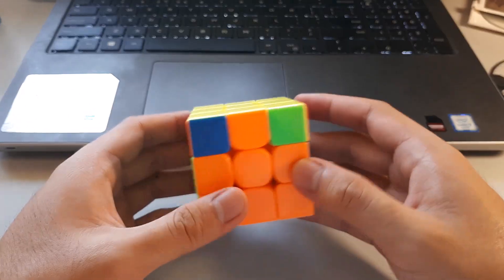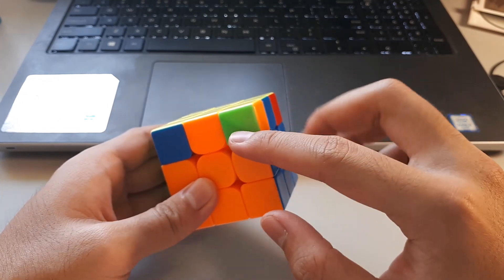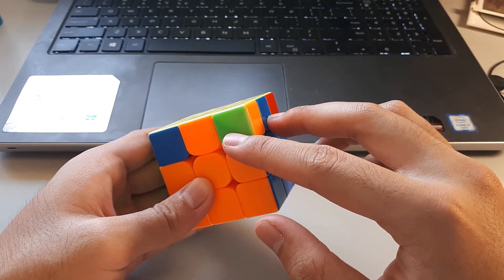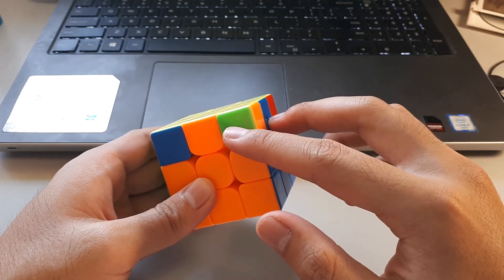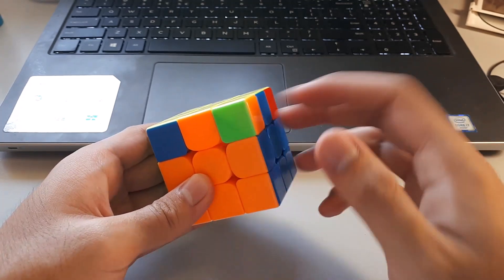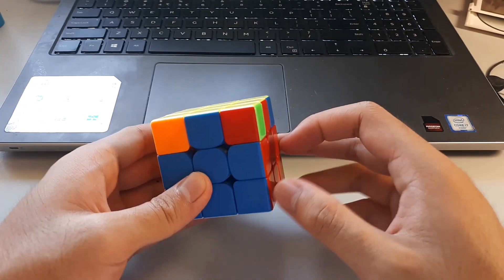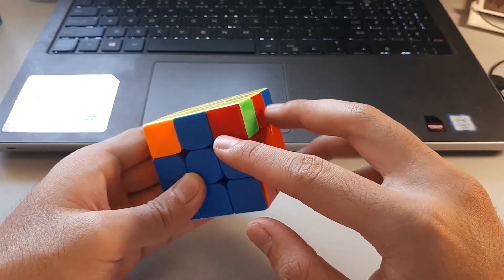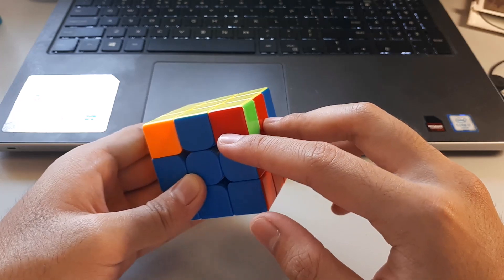So if we rotate this way, for example, if we look at the same two stickers, these two, this time they're not matching, which means that this is actually the wrong way to hold the E-perm and the algorithm won't actually work in this case. So you have to have the corner sticker here and the edge sticker here matching for the angle to be correct.